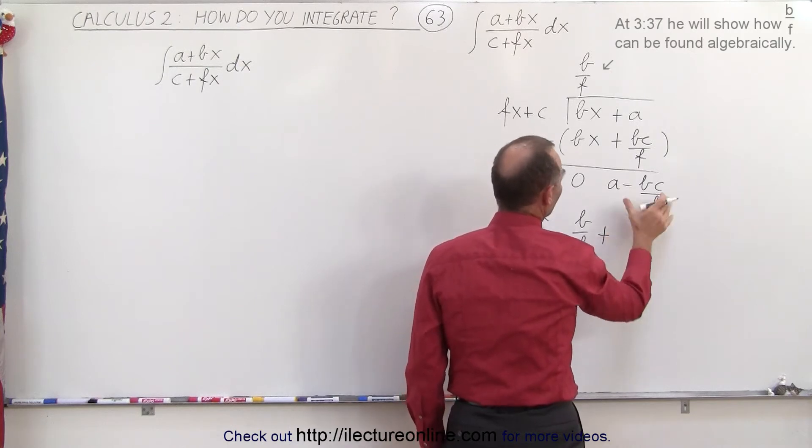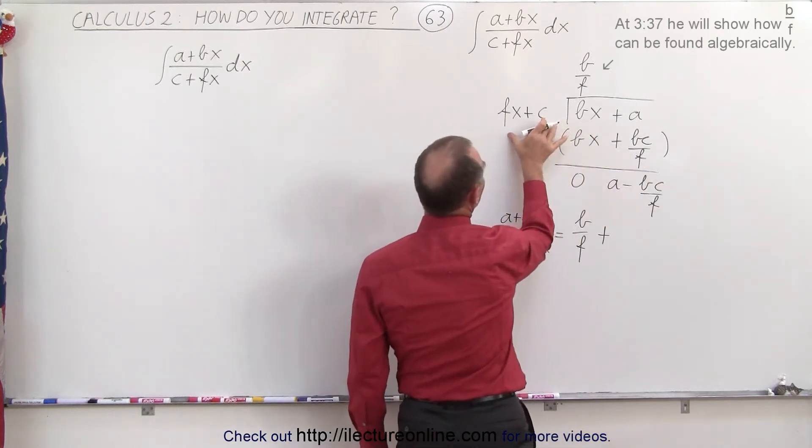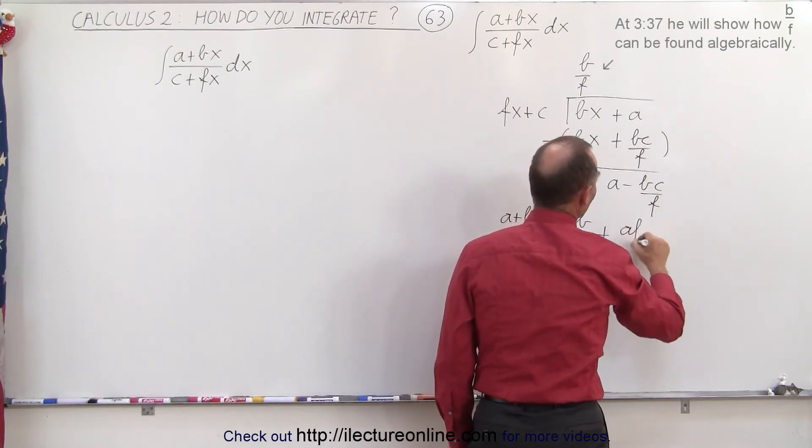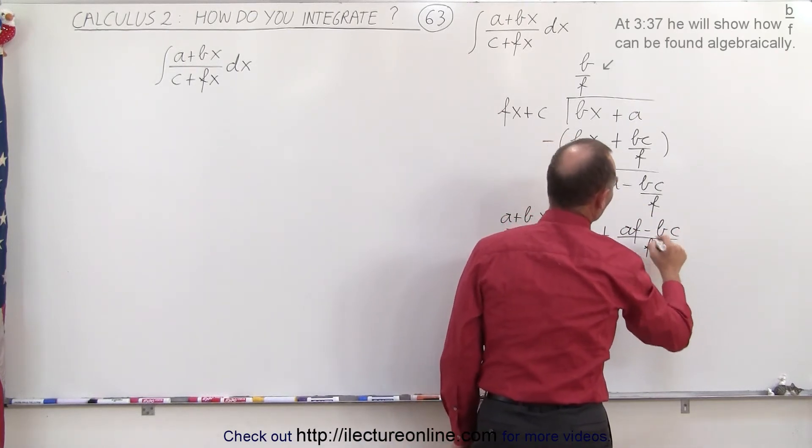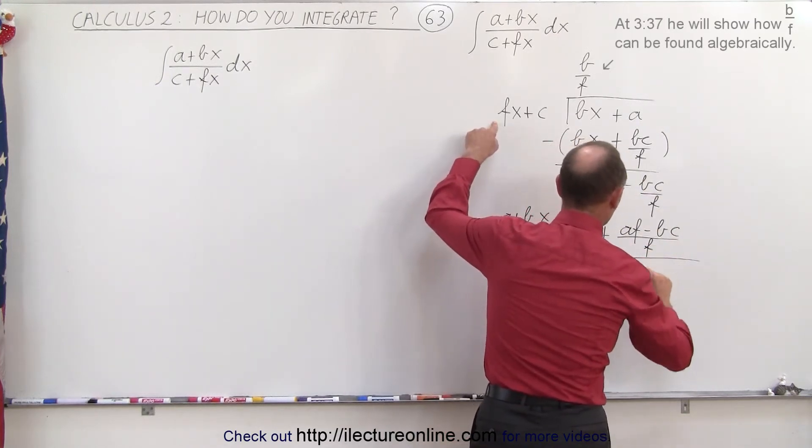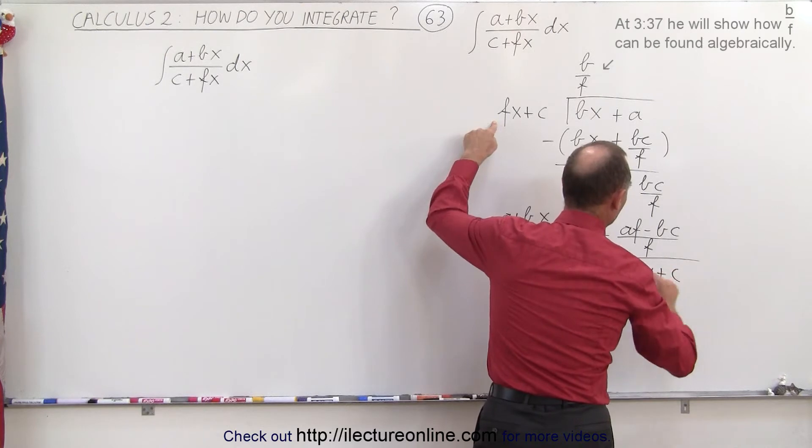So plus the remainder divided by fx plus c. Now the remainder can be written as af minus bc over f, so we write over a common denominator, divided by fx plus c.